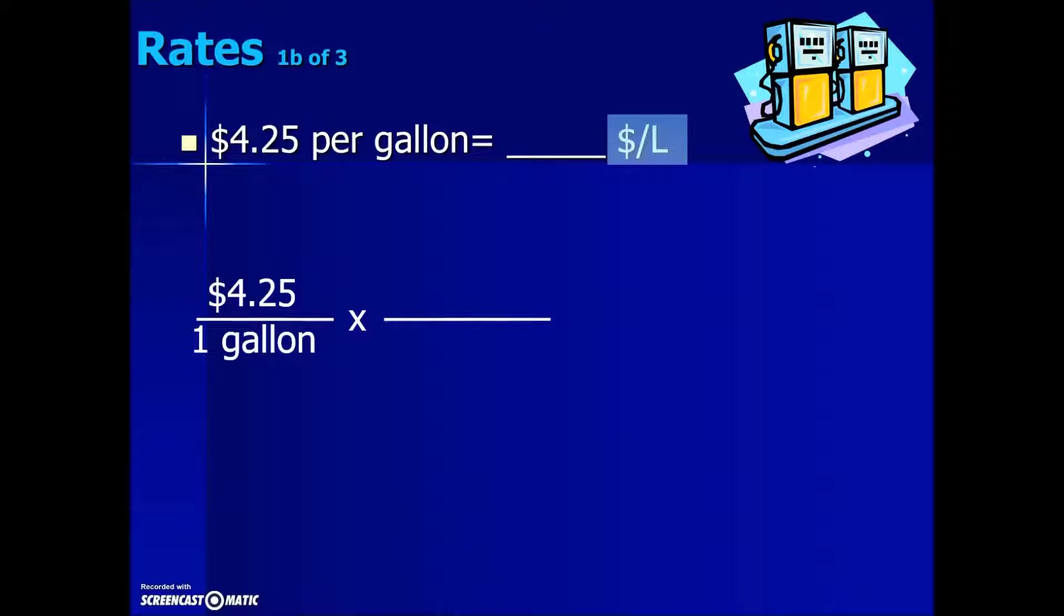We're going to set up our conversion factor fraction so that the current gallons in the denominator is canceled out. Looking up gallons and liters, we find one gallon is equivalent to 3.79 liters. If we express those two equivalent values in a fraction, their overall value is 1, so we're multiplying by 1 to give us an equivalent value that we're looking for. Canceling out common factors, the gallons are gone, leaving us with money per liter. Multiplying numerators and denominators and the division results in $1.12 per liter, an equivalent rate for this item.